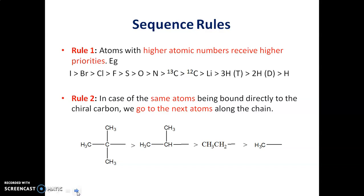Hydrogen gets the least priority. Rule 2: in case the same atoms are bound directly to the chiral carbon, we have to go to the next atom. For example, methyl gets lower priority compared to ethyl, ethyl lower than propyl, and propyl lower than butyl.